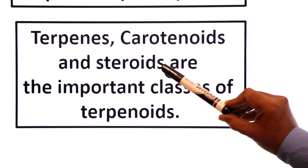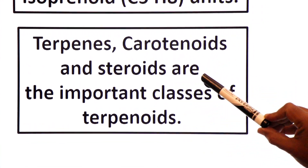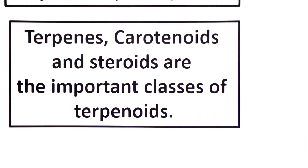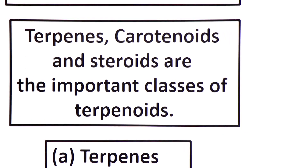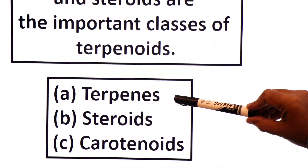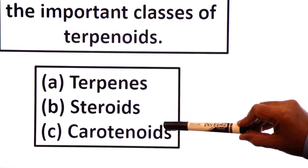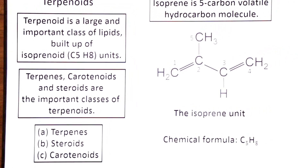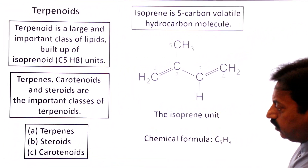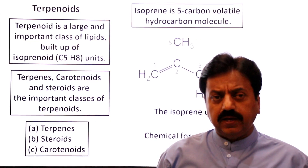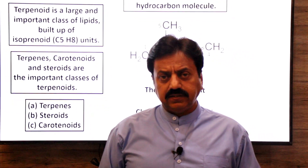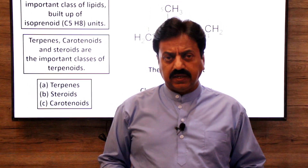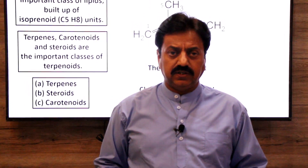Terpenes, carotenoids, and steroids are the three important classes of terpenoids. Class A is terpenes, class B is steroids, and class C is carotenoids. Today's lecture will focus on terpenes and the classification of terpenes.